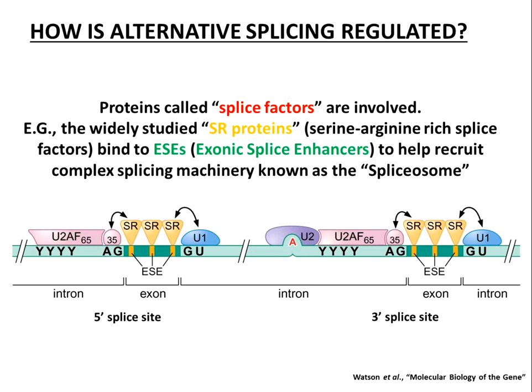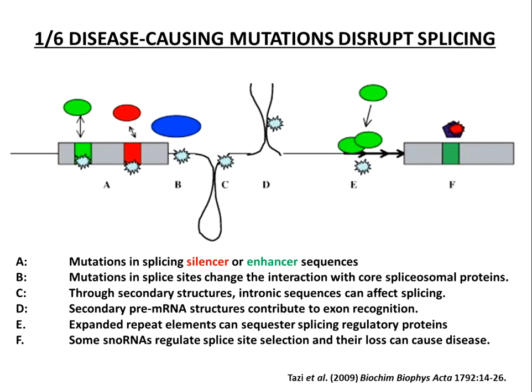The SR proteins are a widely studied group of splice factors with a serine-arginine enriched domain. They have been extensively implicated in oncogenic processes, and we'll be looking at a prime example later. Another very important fact is that one in six disease-causing mutations are thought to disrupt splicing. With the vast majority of our genes being multi-exon and alternatively spliced, it is not surprising that there are many disease-causing mutations, including mutations linked to cancer, that disrupt splicing.